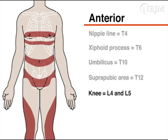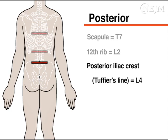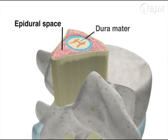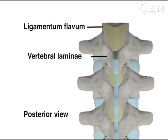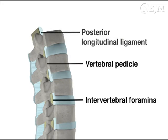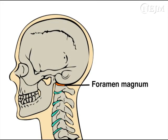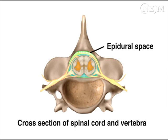The knee corresponds to the L4 and L5 dermatomes. Important posterior landmarks include the inferior border of the scapula (T7 vertebral body), the most inferior aspect of the 12th rib (L2 vertebral body), and the imaginary line between the posterior iliac crests—also known as Tuffier's line—which corresponds to the L4 vertebral body. The epidural space surrounds the dura mater and is bordered posteriorly by the ligamentum flavum and vertebral laminae, anteriorly by the posterior longitudinal ligament, laterally by the vertebral pedicles and intervertebral foramina, superiorly by the foramen magnum, and inferiorly by the sacrococcygeal membrane. The epidural space contains fat, lymphatics, veins, and the nerve roots that traverse it. There is no free fluid in the epidural space.